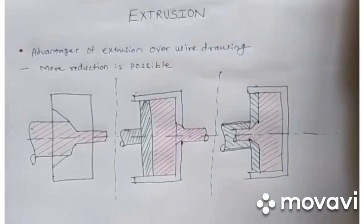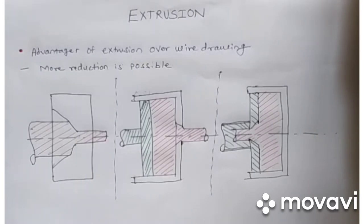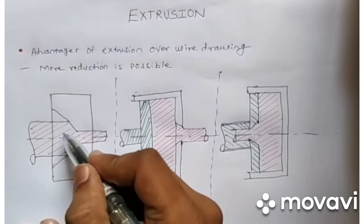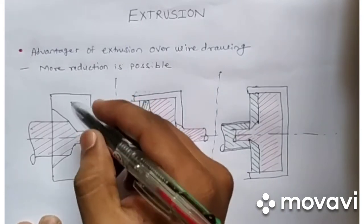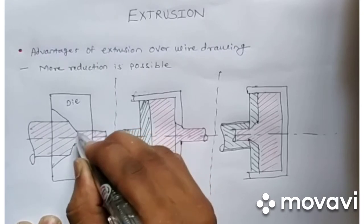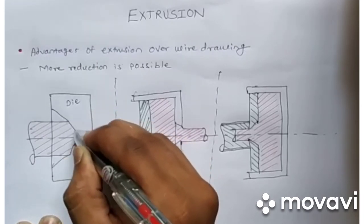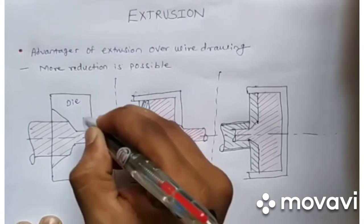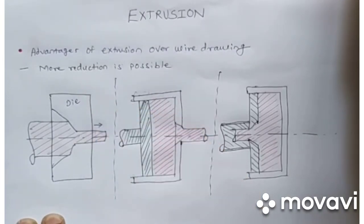Hello and welcome to our channel Intro Mech. We are discussing metal forming processes. In the previous session we discussed the wire drawing process. In the wire drawing process there is a stationary die, and we pull a rod through the die cavity from the front side.